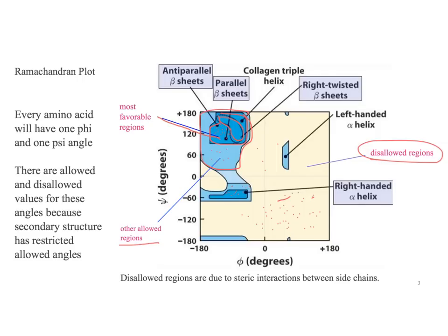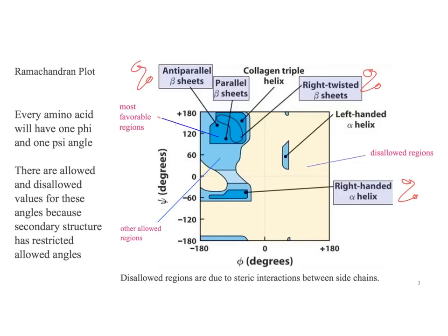Where the dots are placed gives you an indication of whether the structure was solved correctly. Another piece of information you can get from the Ramachandran plot is the percent alpha helix and percent right-twisted beta sheet. For example, if your Ramachandran plot has most dots in the beta sheet region and a couple in the alpha helix region, you would say the protein is mostly beta sheet with a little alpha helix — and since all dots are in the allowed region, the structure was likely solved correctly.